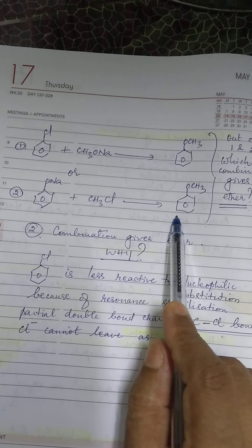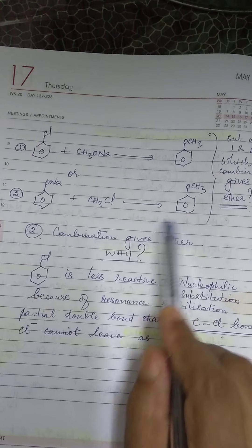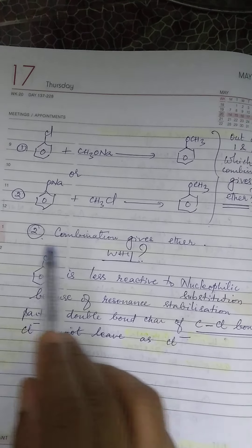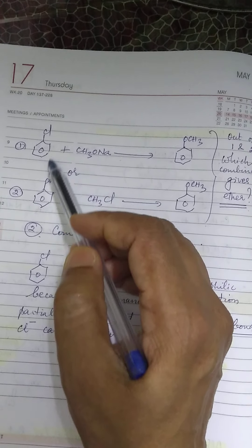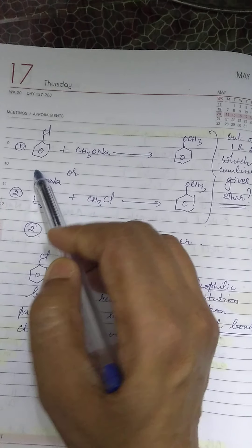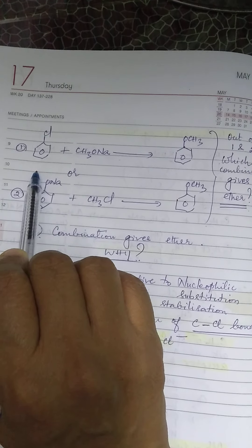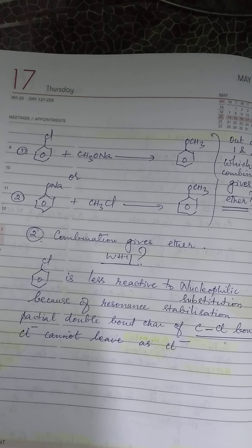So, you will get methoxy benzene. Second combination gives ether and not the first combination. Why? Because halo-arenes are less reactive towards nucleophilic substitution because of resonance stabilization.